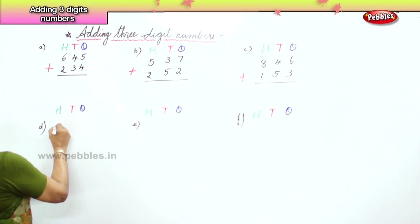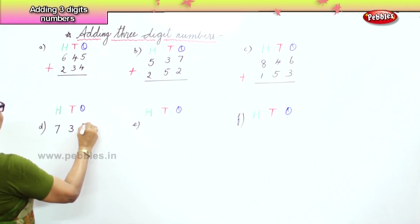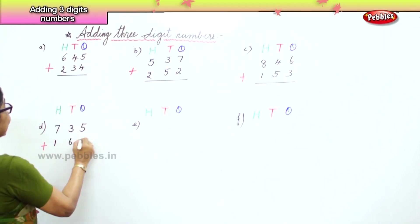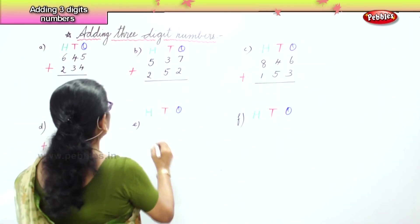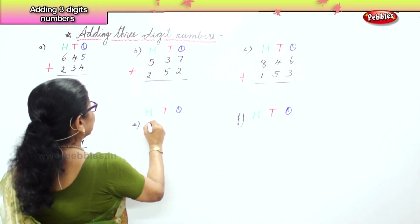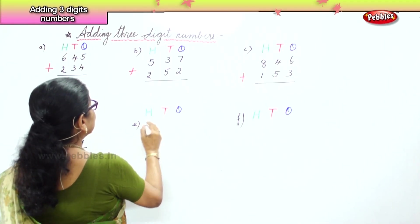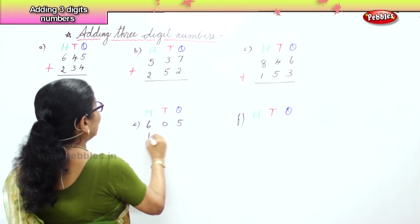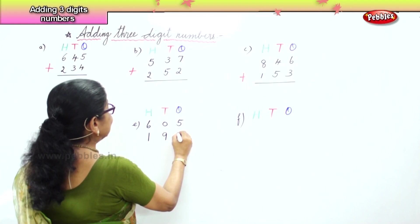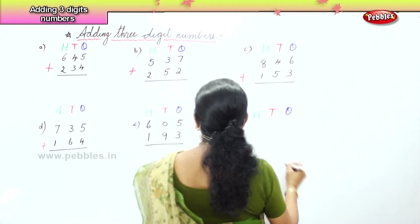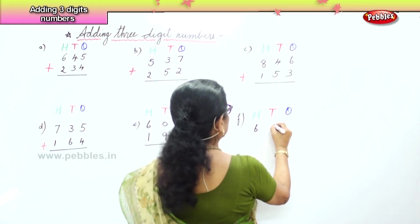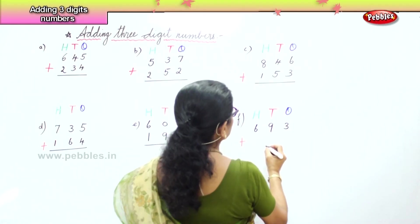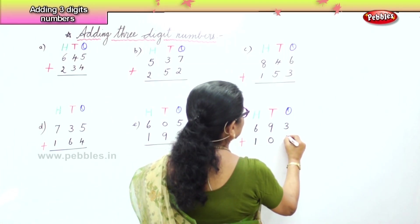You have seven hundred and forty-five plus one hundred and sixty-four. Here you also have seven hundred and sixty-four. Six hundred and five plus one hundred and ninety-three. Next: six hundred and ninety-three plus one hundred and four.